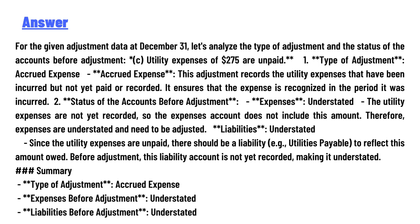Regarding the status of accounts before adjustment: expenses are understated. The utility expenses are not yet recorded, so the expense account does not include this amount — therefore expenses are understated and need to be adjusted. Liabilities are also understated, since the utility expenses are unpaid, there should be a liability such as utility bills payable to reflect this amount.